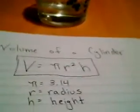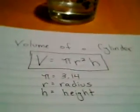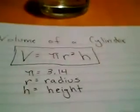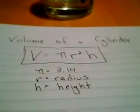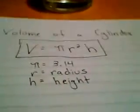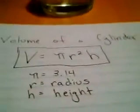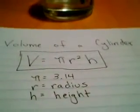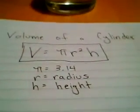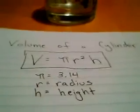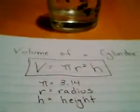To find the volume of the cylinder, we have a formula. The mathematical formula for the volume of the cylinder is pi times r squared times h. Pi stands for the constant 3.14. R is the radius of the base of the cylinder, and h stands for the height of the whole object from top to bottom.